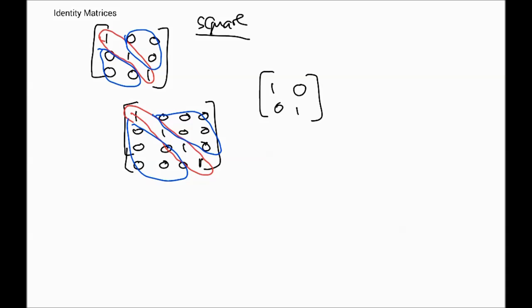The property of the identity matrix is analogous to the number one: when we multiply one by any number we get that number itself. The similar idea applies to identity matrices. When we take any matrix A of appropriate size and multiply it by the identity matrix I, this product is commutative — AI is the same as IA — and both equal A. You can multiply any matrix by the identity matrix of appropriate size and the result will be A itself.